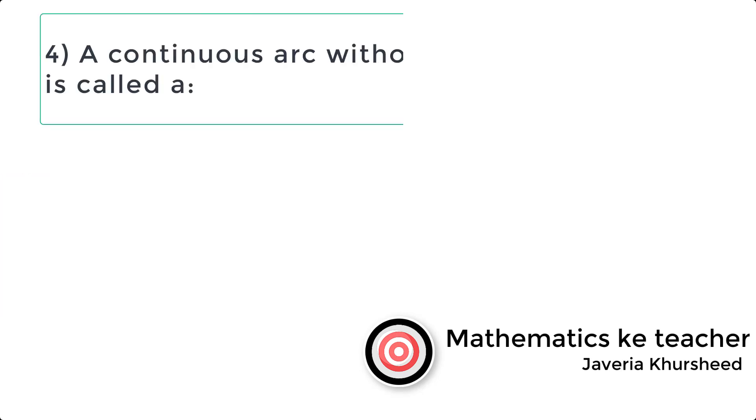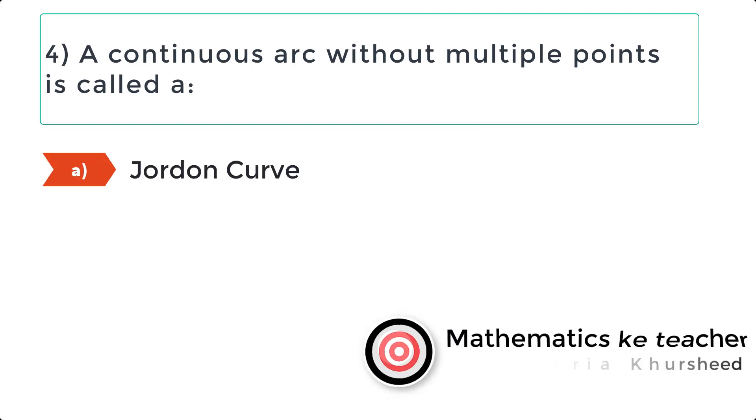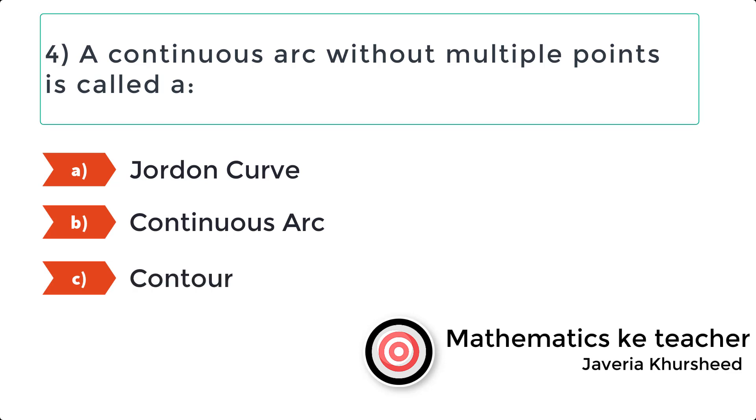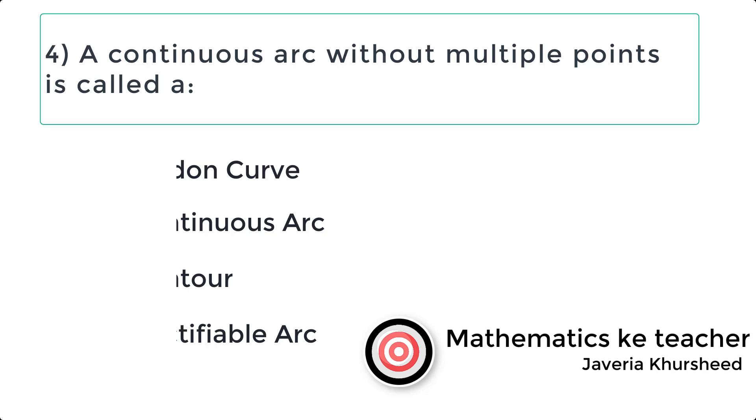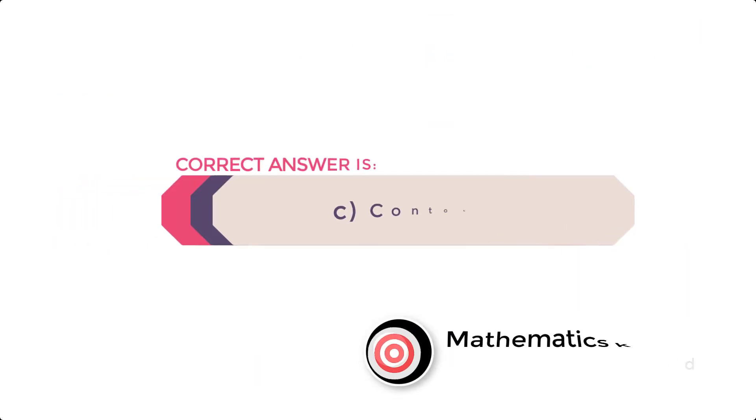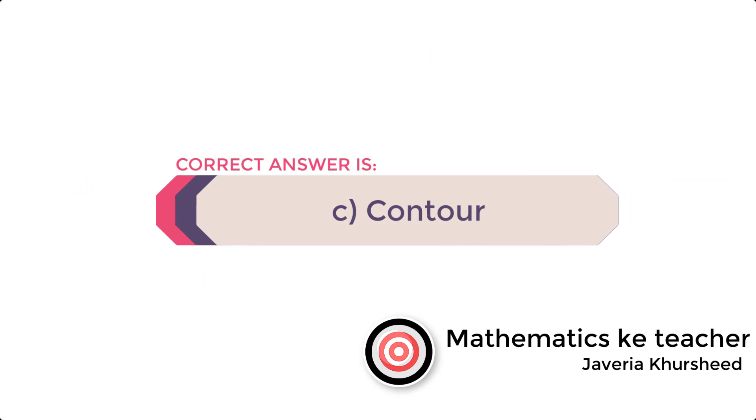Question 4: A continuous arc without multiple points is called: A) Jordan curve, B) Continuous arc, C) Contour, D) Rectifiable arc. Correct answer is C) Contour.